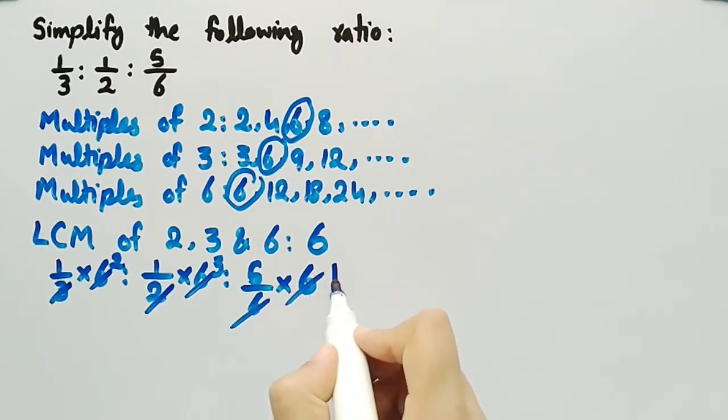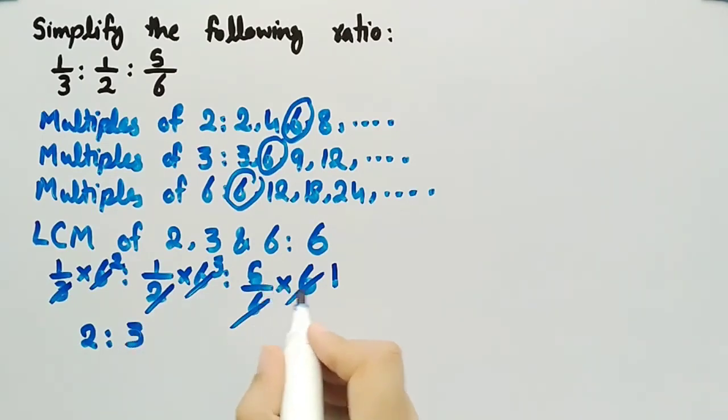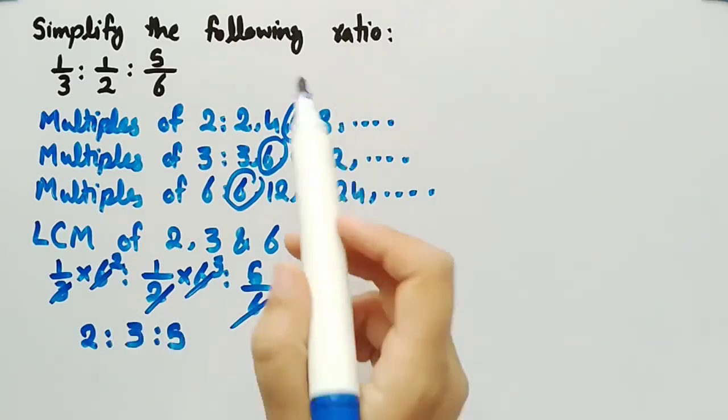So by multiplying, 1/3 by 6 we get 2, 1/2 multiplied by 6 is 3, and 5/6 multiplied by 6 is 5. So this is the simplified ratio: 2:3:5.